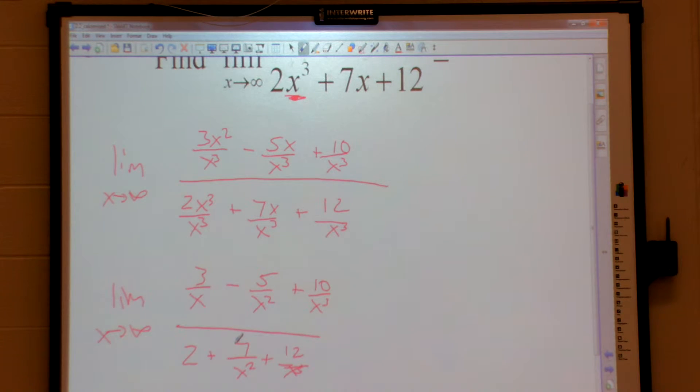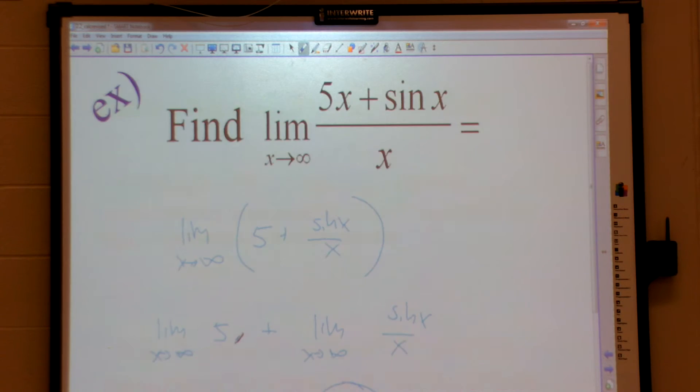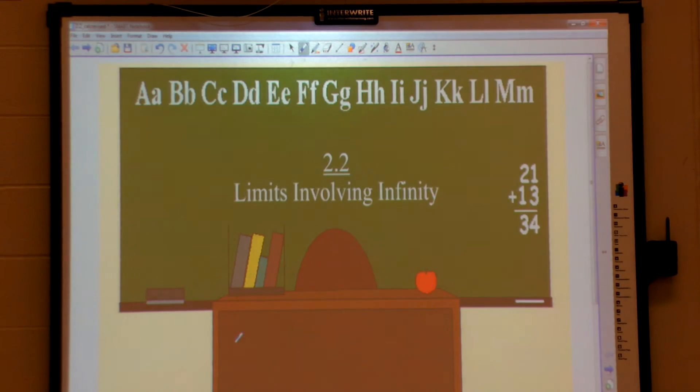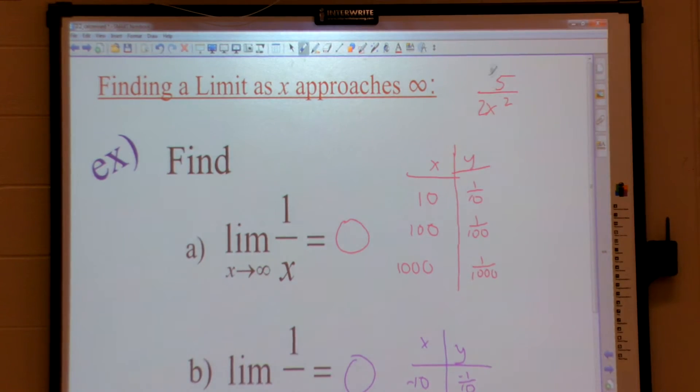Now you may be thinking, how the heck did that help us? That just looks gross. But think way back to the beginning here. If I have a constant over a variable, think of our table. As that bottom gets bigger and bigger and bigger, what's the whole fraction going to?